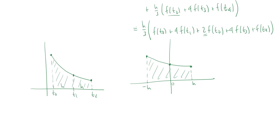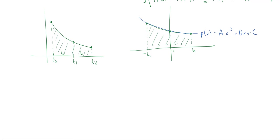The curve is going to be approximated by a parabola drawn through the three sample points — we can do this using the Lagrange polynomial. That parabola gives us a polynomial p(x), which is a generic quadratic: p(t) = at² + bt + c. We want to integrate p from -h to +h.